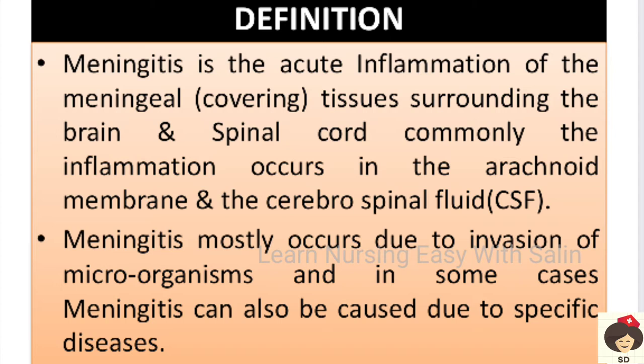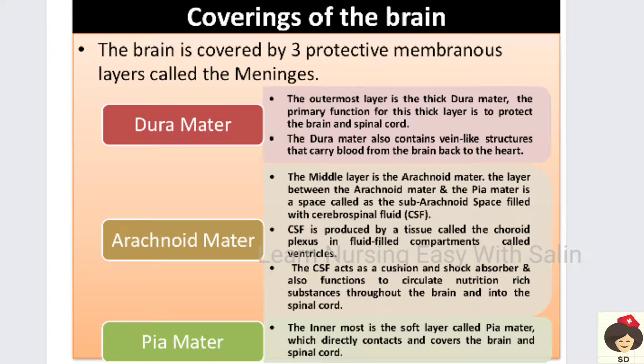In some conditions meningitis can be non-infectious — due to specific diseases rather than infection. The brain has three main protective membranous layers called meninges, from the Greek word for membrane. The outermost layer sits just inside the skull and is very hard — in Latin, 'dura' means hard — so it is called the dura mater. It is a hard, thick layer protecting the brain and spinal cord, and contains many vein-like structures that return blood to the heart for oxygenation.